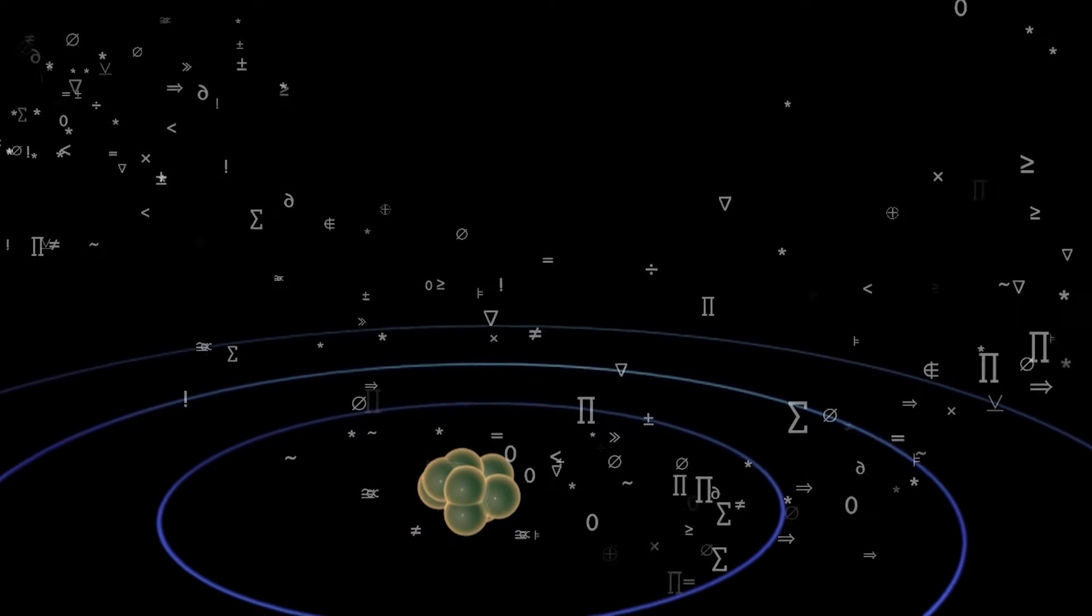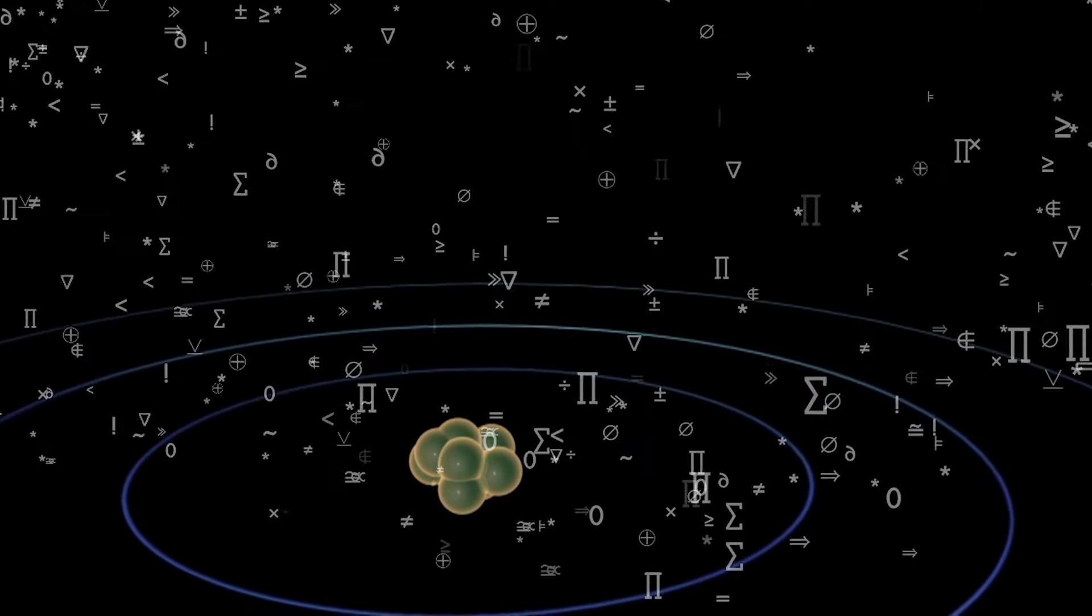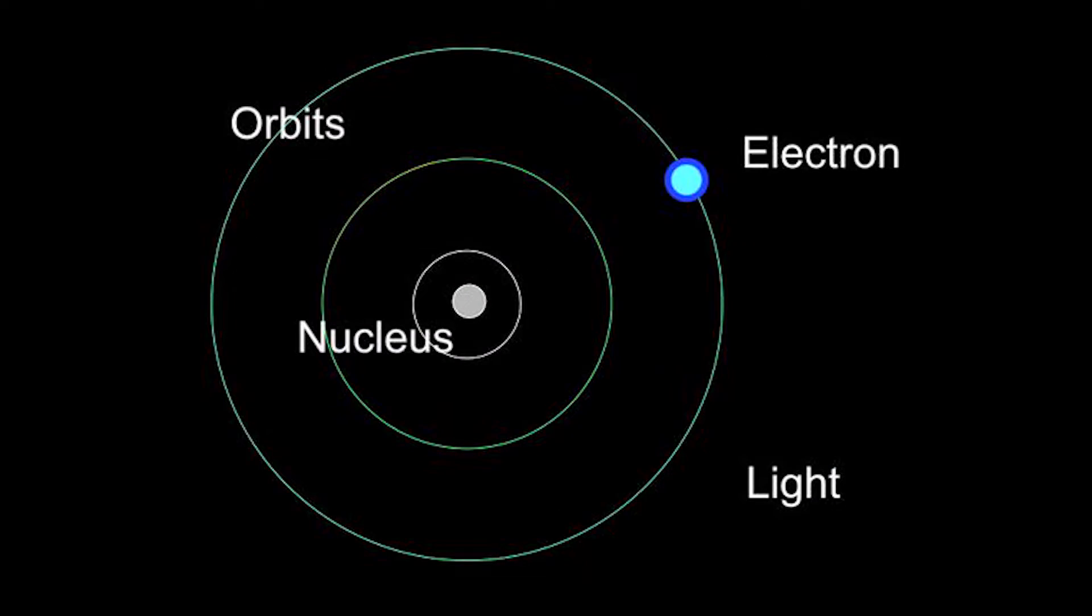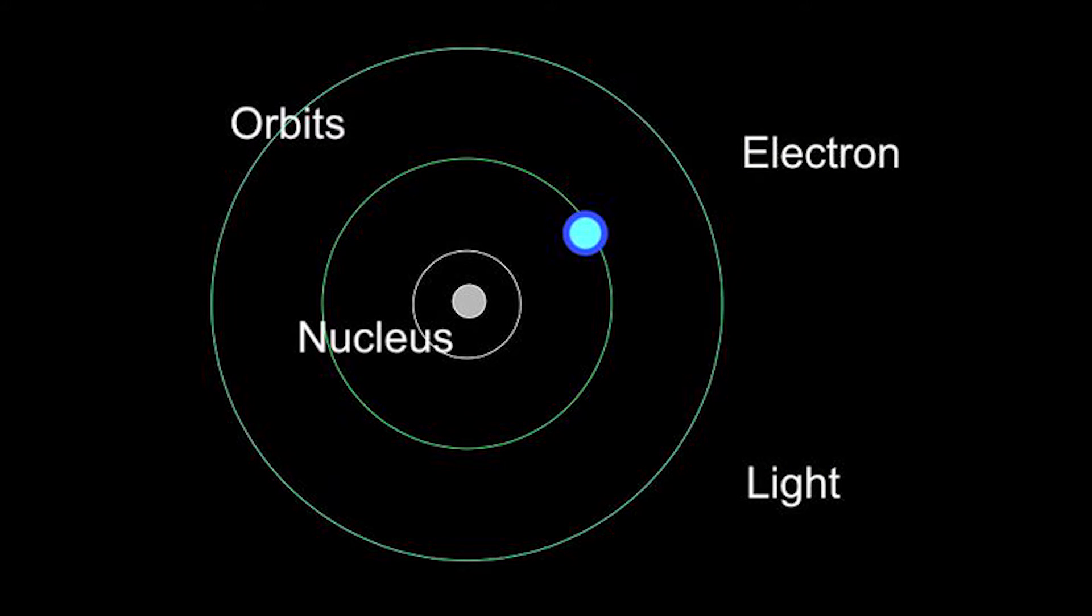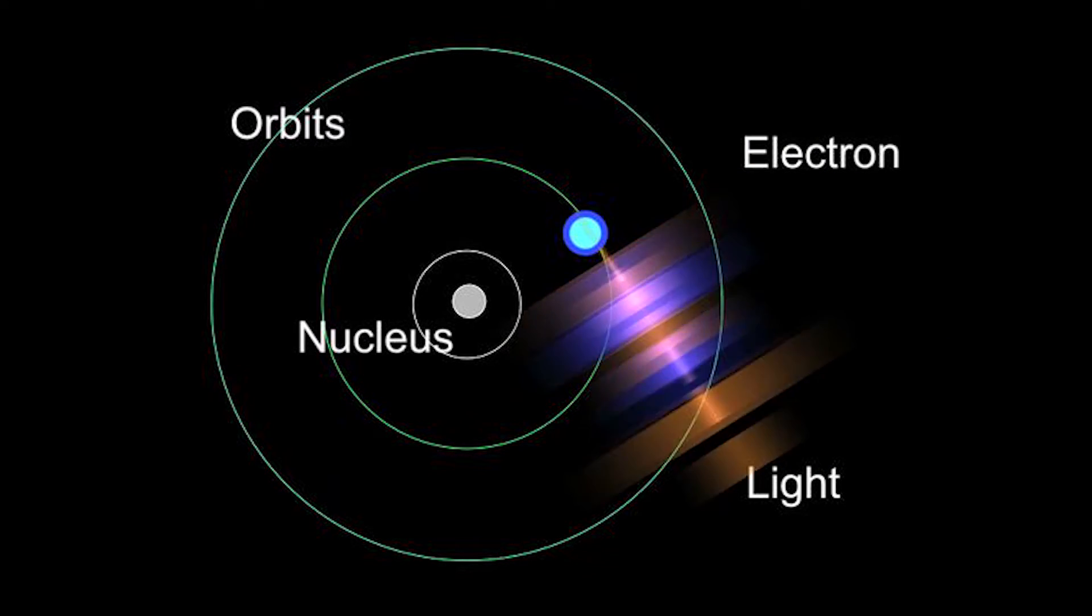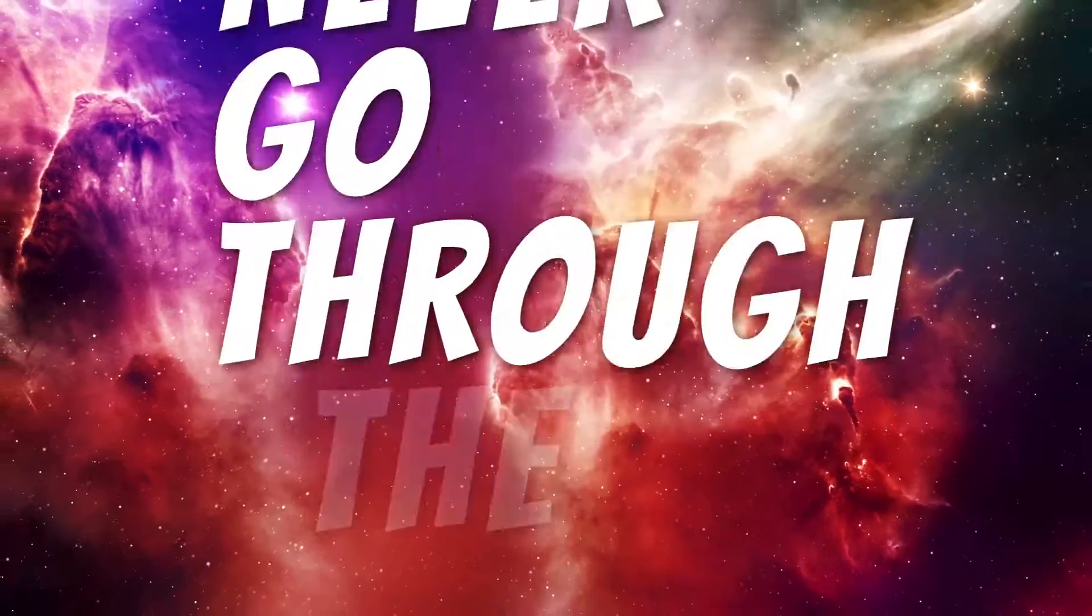Following Niels Bohr, we call this discontinuous movement a quantum leap. According to Bohr, when electrons jump from one atomic orbit to another, they never go through the intervening space.